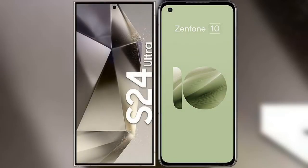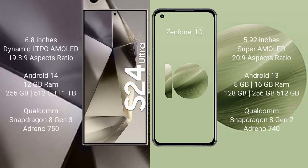I will compare the new Samsung Galaxy S24 Ultra with Asus Zenfone 10. Samsung Galaxy S24 Ultra comes with a 6.8-inch Dynamic LTPO AMOLED display and a 19.3:9 aspect ratio. Asus Zenfone 10 comes with a 5.92-inch Super AMOLED display and a 20:9 aspect ratio.